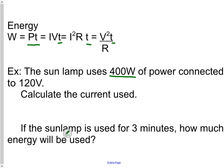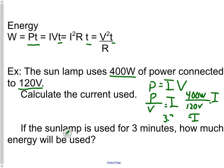We know that a sun lamp uses 400 watts of power and it's connected to 120 volts. I want you to calculate the current used. We know that we have P and we have V, so I can use this equation again: P equals IV. We're going to solve for current, so P divided by V is going to give me the current used. I have 400 watts divided by 120 volts equals I. I ends up being 3.3 amps.